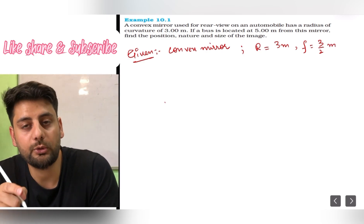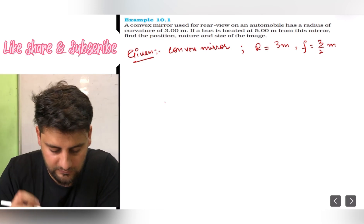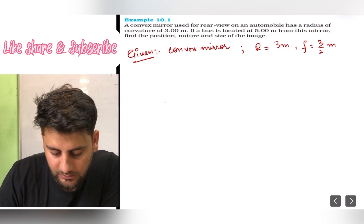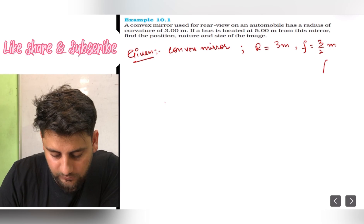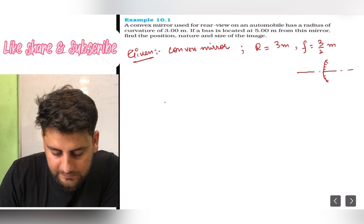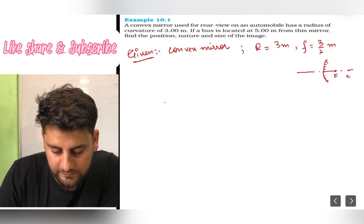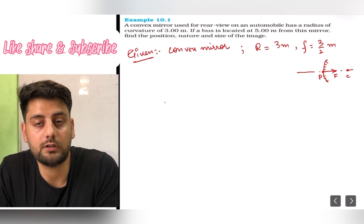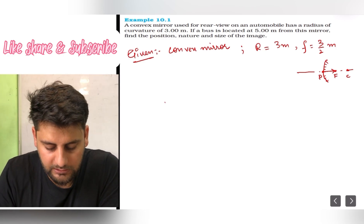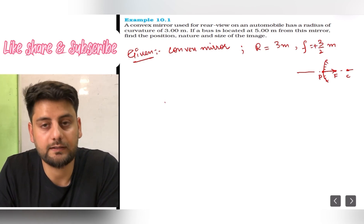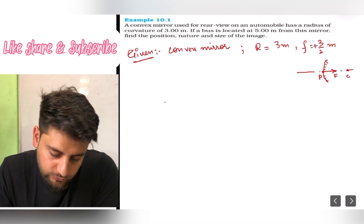Now one more question: is this focal length positive or negative? Sign conventions. If I draw a convex mirror, you can see its principal focus is behind the mirror and this is its center of curvature. So if I take pole as origin, then its focus is positive, so I'm taking positive focal length.